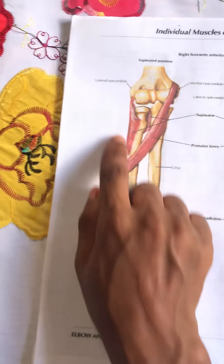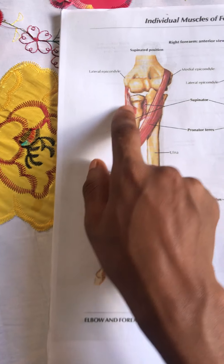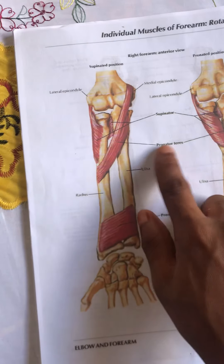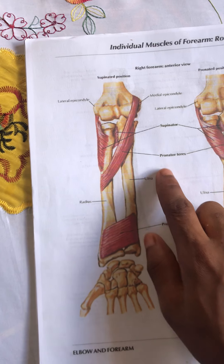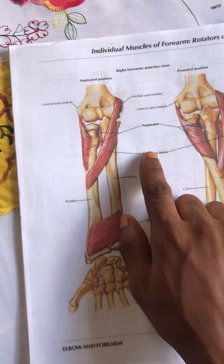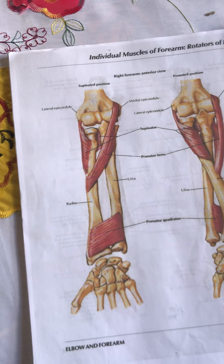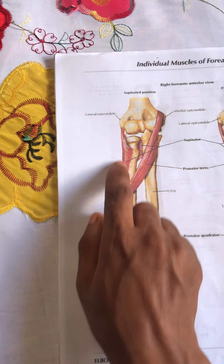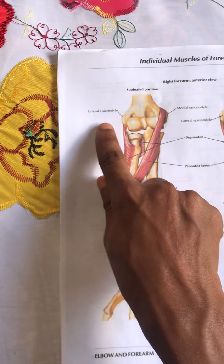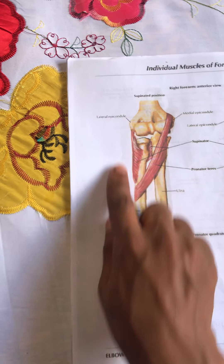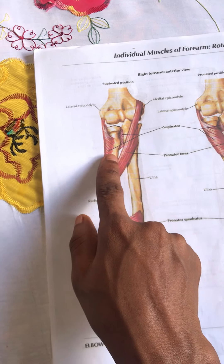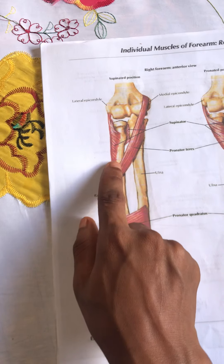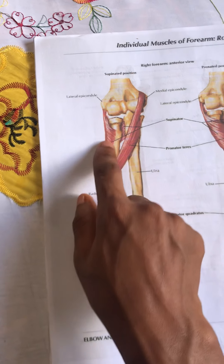Now let us discuss the supinator muscle. The supinator is antagonistic to both the pronator teres and the pronator quadratus muscles. The origin of the supinator is the lateral epicondyle of the humerus, and it is inserted into the lateral proximal radial shaft.